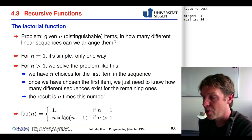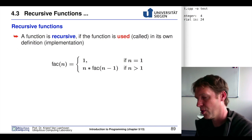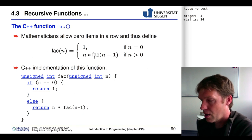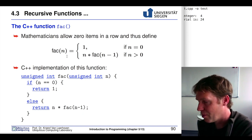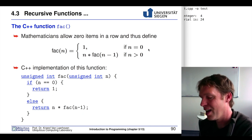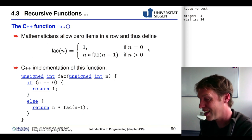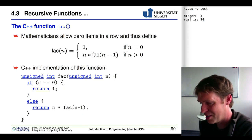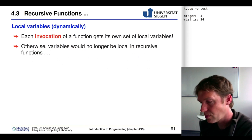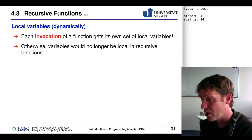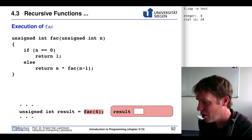The reason it works is because a function can call itself. This is a little bit hard to understand sometimes, but that's what recursive functions are about. Each time we call that function, it gets its own set of local variables that are destroyed as soon as we exit or return from that function. We're going to see this now in a little animation.